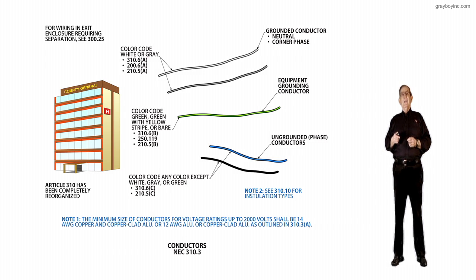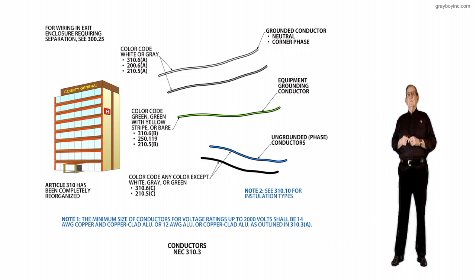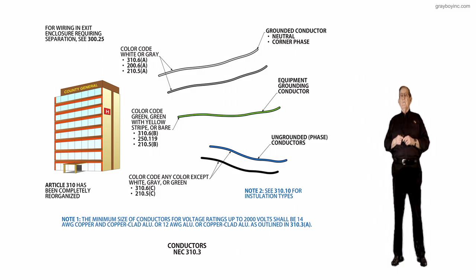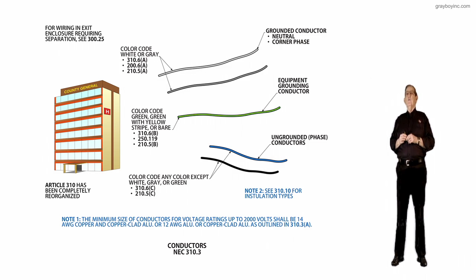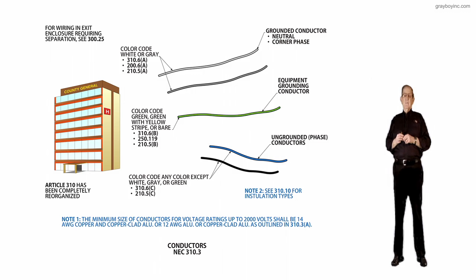For wiring in an exit enclosure requiring separation, remember we looked at that, we'll review it, 300.25. But now I would remind you that if you're looking at wiring in air handlers, such as under raised floors and so forth, look at 300.22 C, D and 645.4 and 5E.